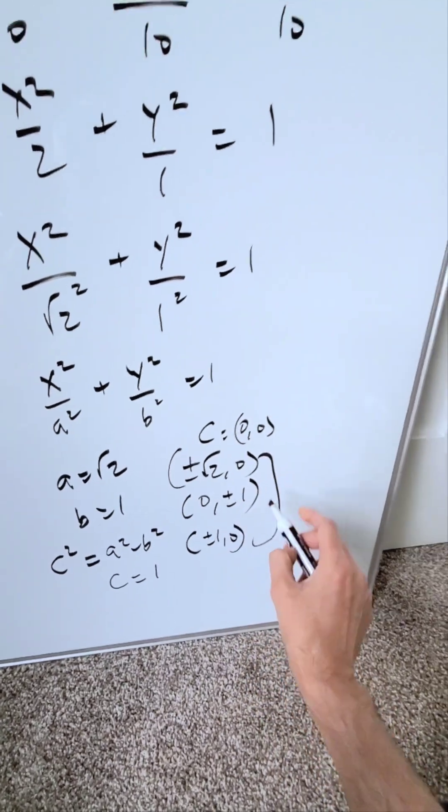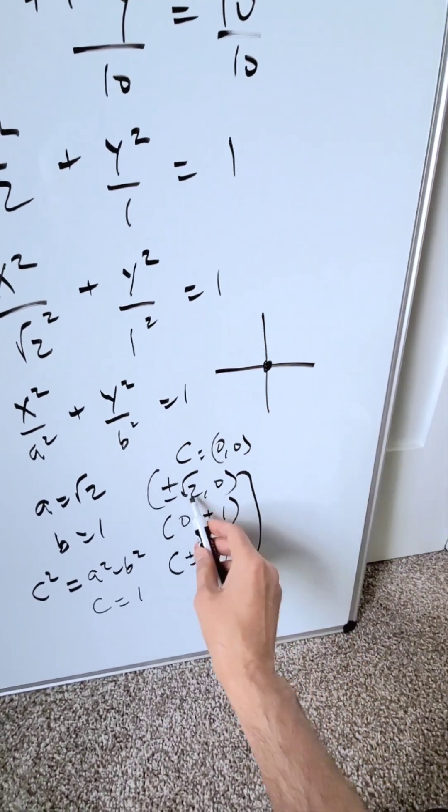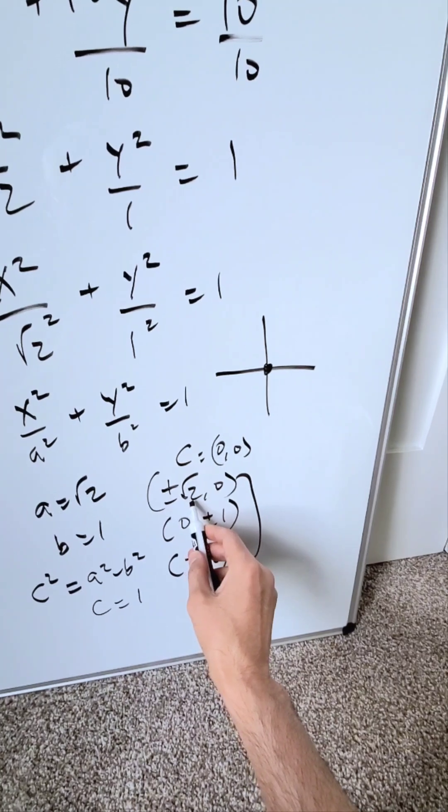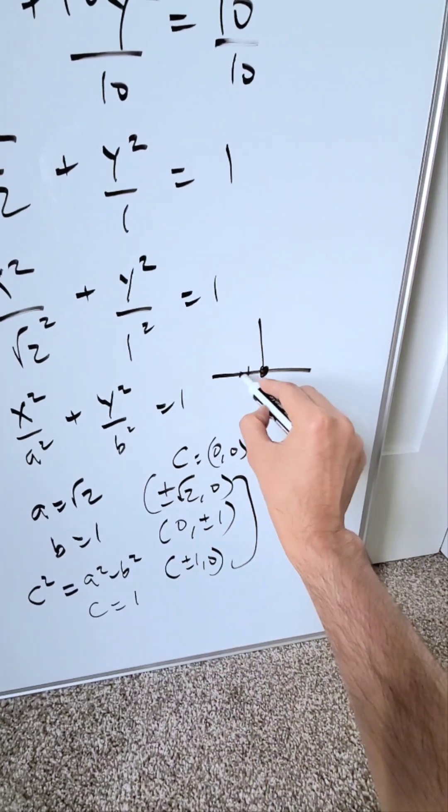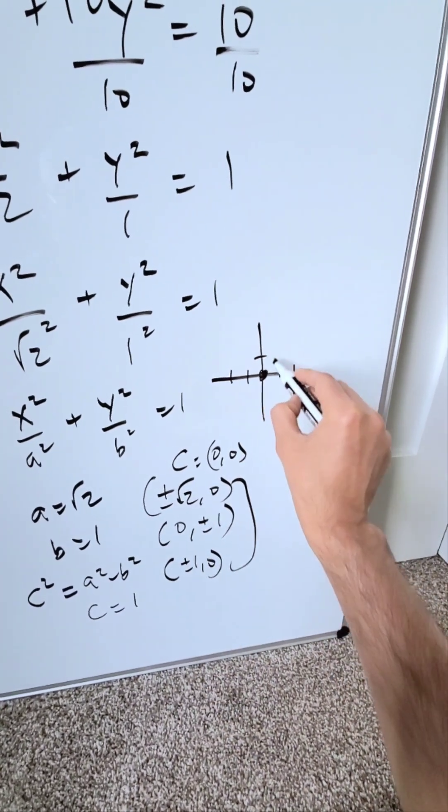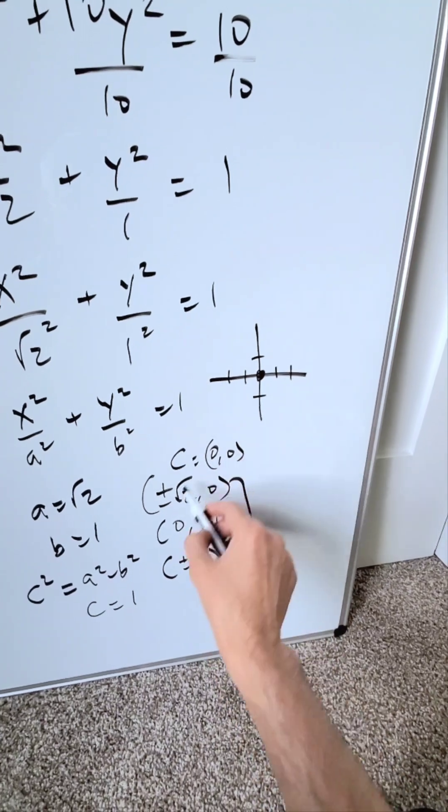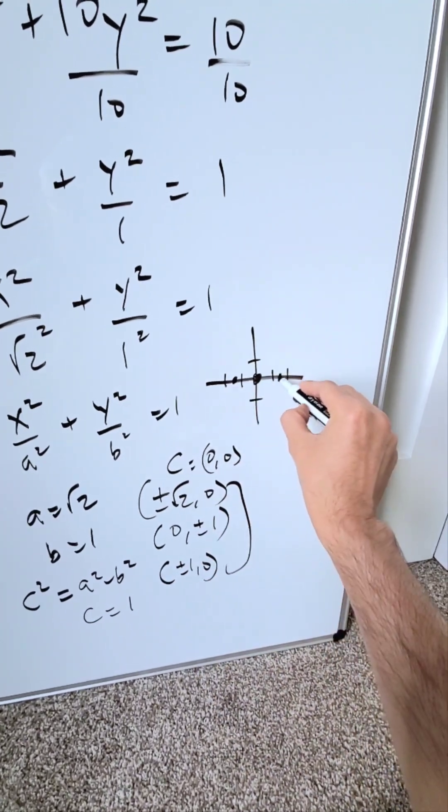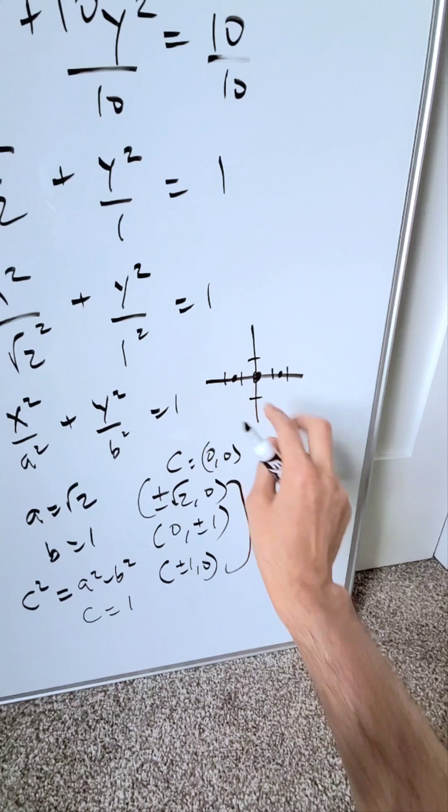Let's put these things together. We have a center here at the origin. I have here plus and minus root 2. These are my vertices. Let's call this 1, 2, 1 and 2. I have a 1 here, 1 here. This plus and minus root 2 will fall somewhere in between here and these will be your vertices, your endpoints.